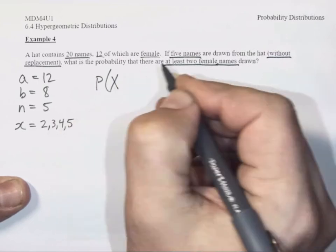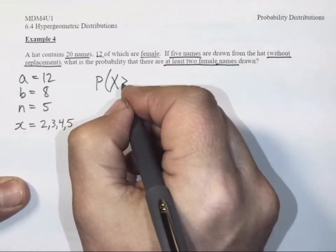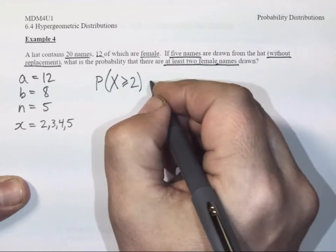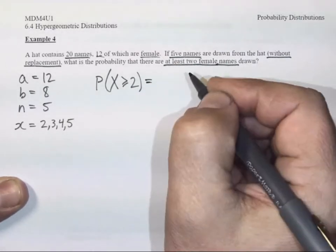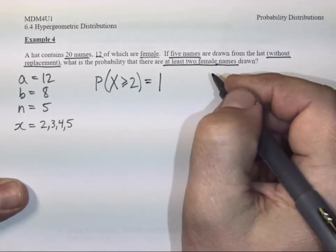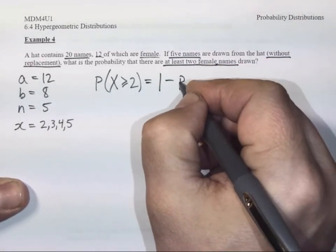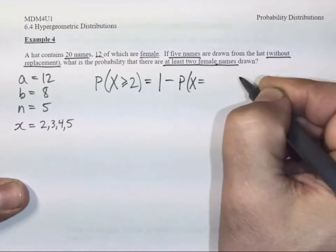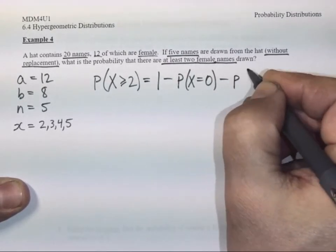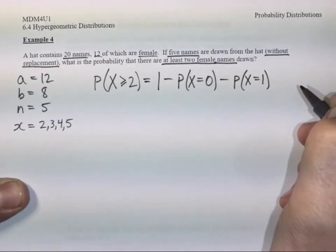So we are going to say that the probability that our random variable X is greater than or equal to 2, that's at least two female names drawn, is the same thing or equivalent to 100%, 1, we're using the indirect method here, minus the probability that X is equal to 0, don't need that case, minus the probability that X is equal to 1, don't need that case either.